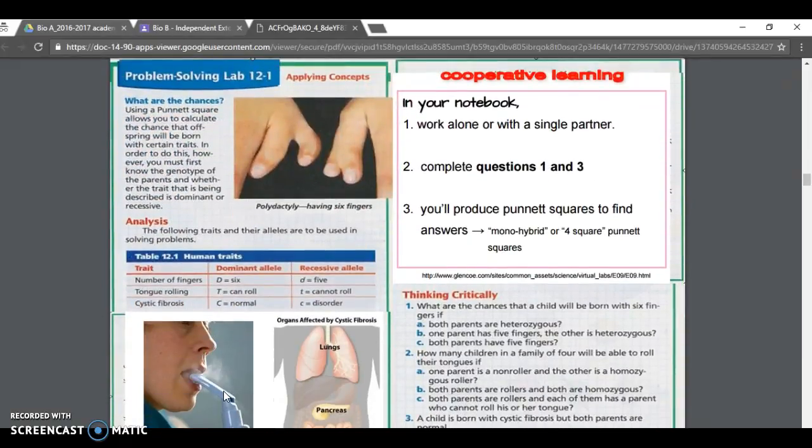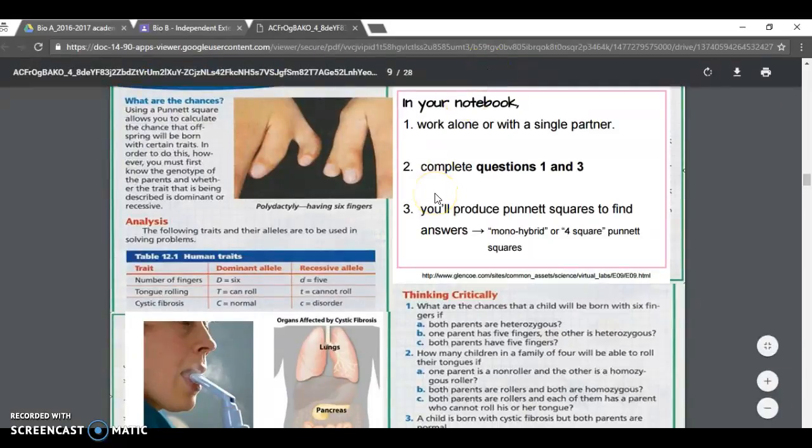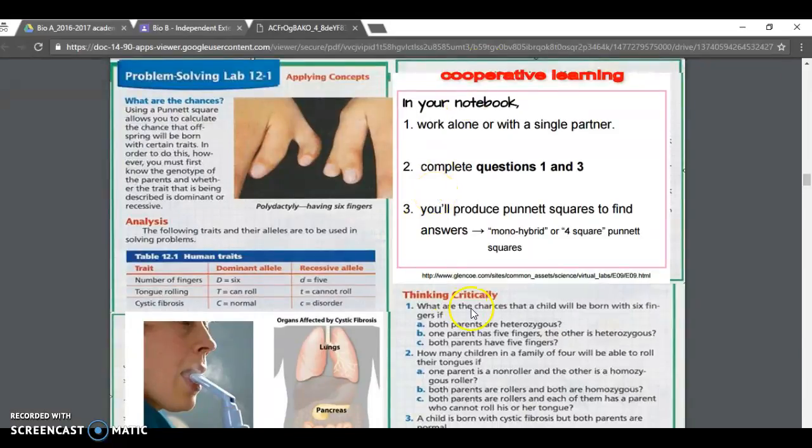Let's move on to this one for the last part of this video. Then we'll do slides 10 through 28 hopefully on the second one. Your job basically is to study this table. There are three different traits: number of fingers, tongue rolling, or cystic fibrosis. And it symbolizes them by dominant or recessive alleles.